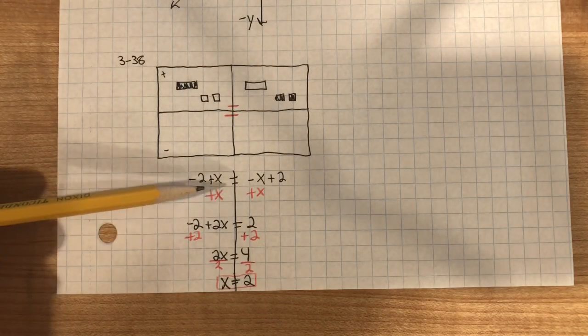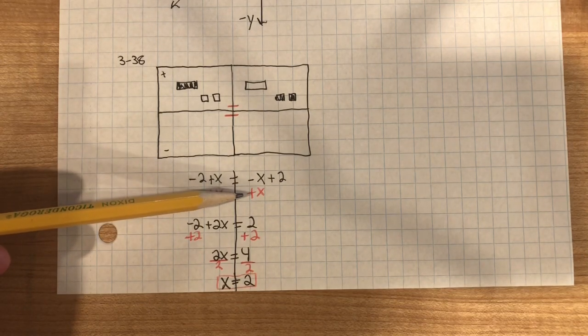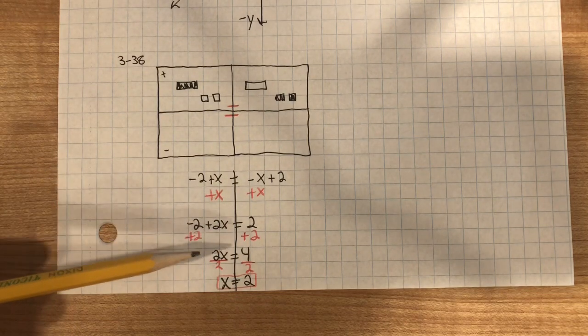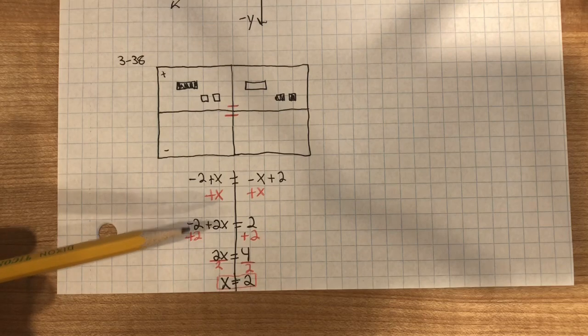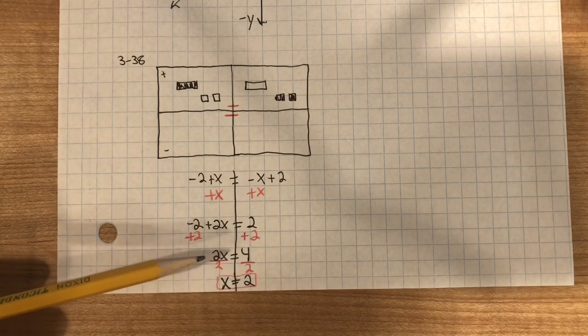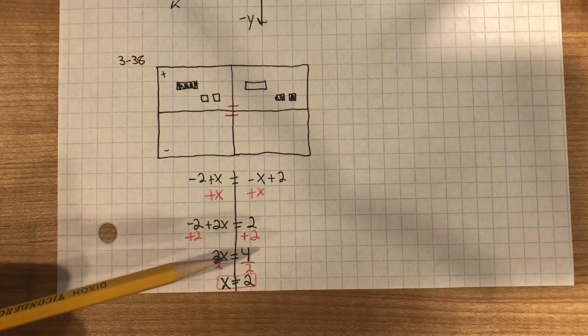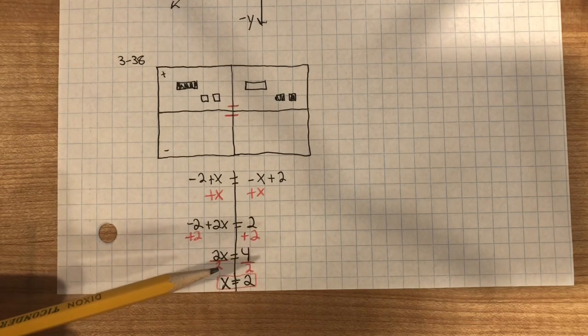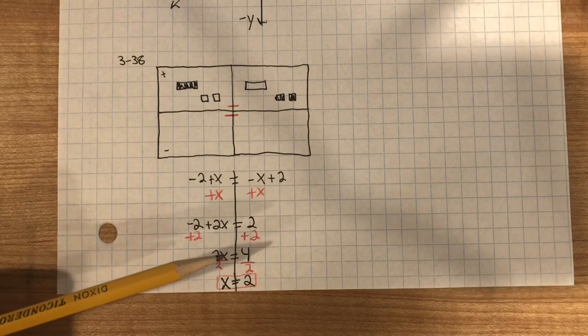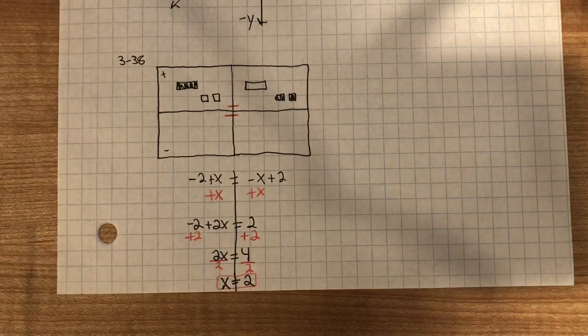Inverse property of subtraction is addition. We add x to both sides, which gives us 2x. We add 2 to both sides. Then we have 2x equals 4. Inverse property of multiplication is division, creates the giant 1, which is the identity property of multiplication. 1 multiplied by x is x. 4 divided by 2 is 2. x equals 2.